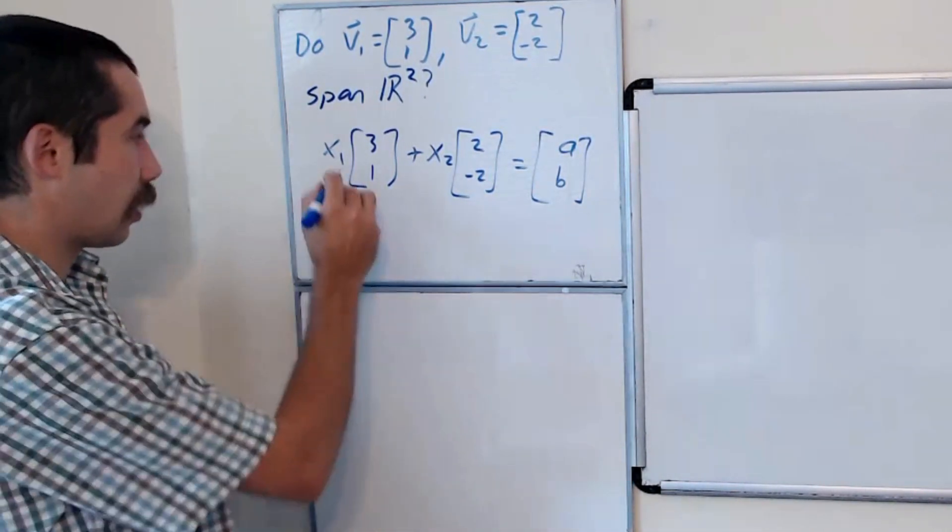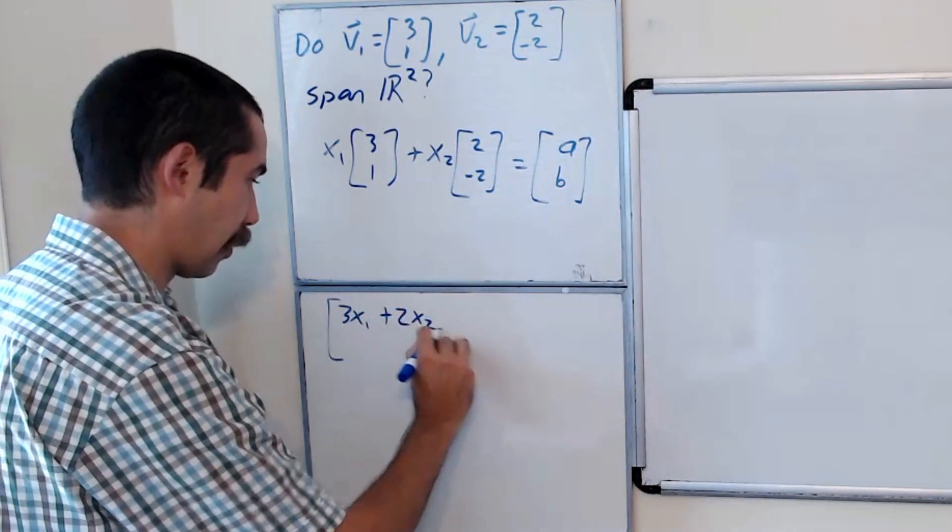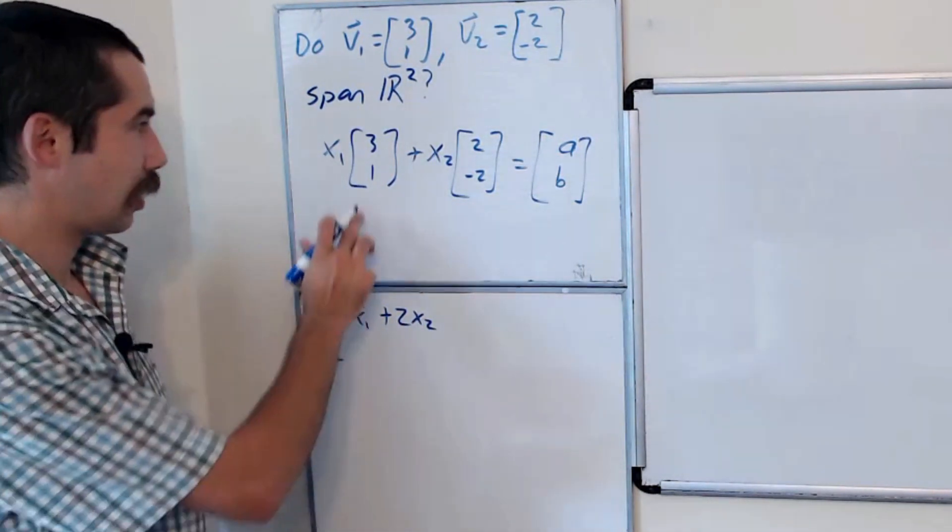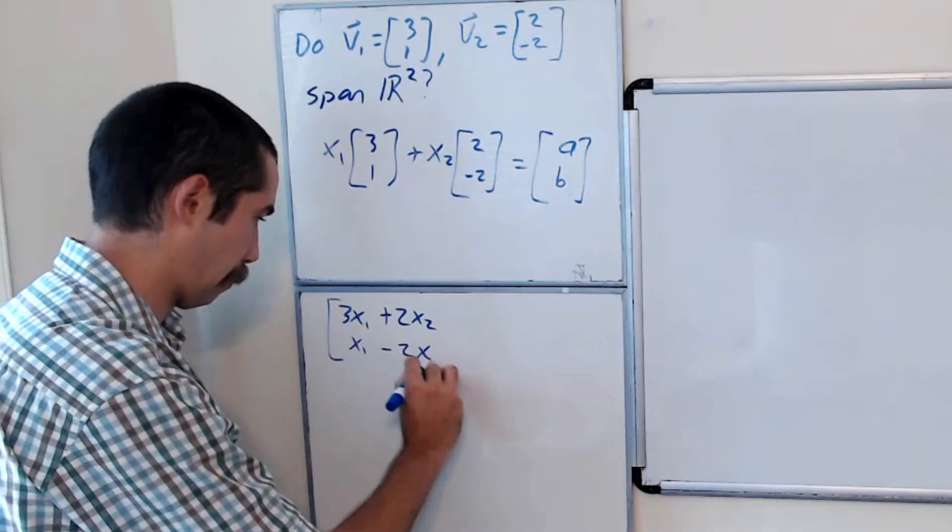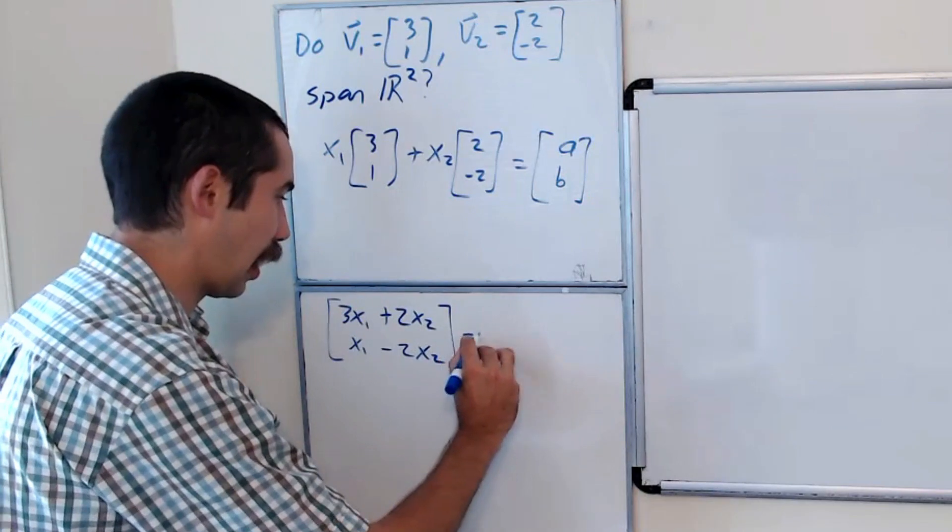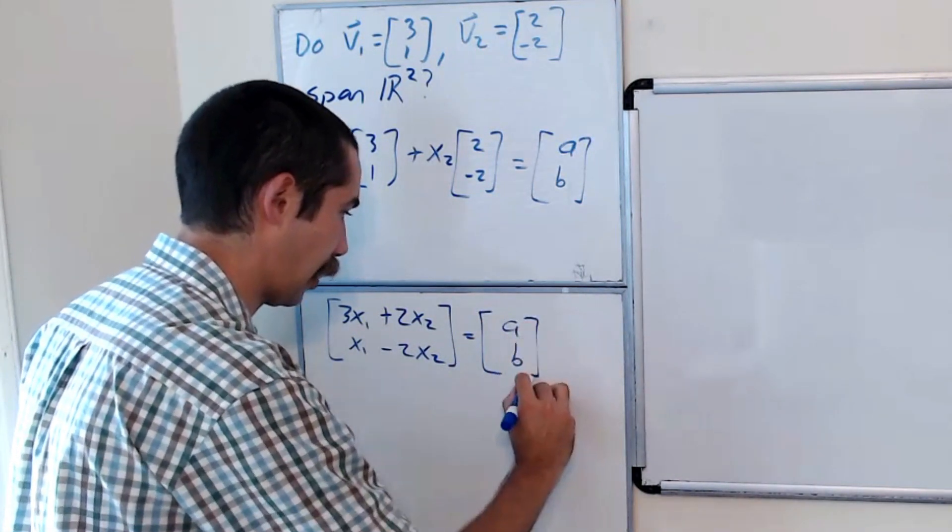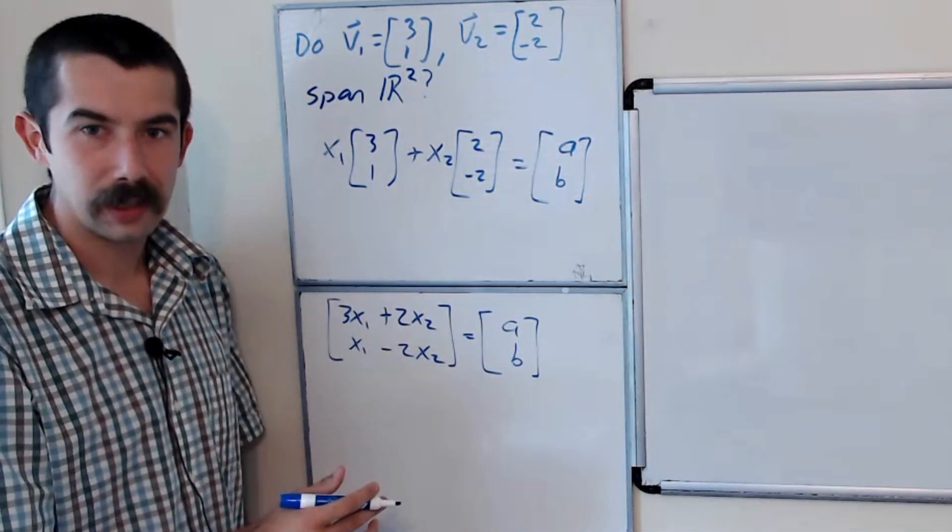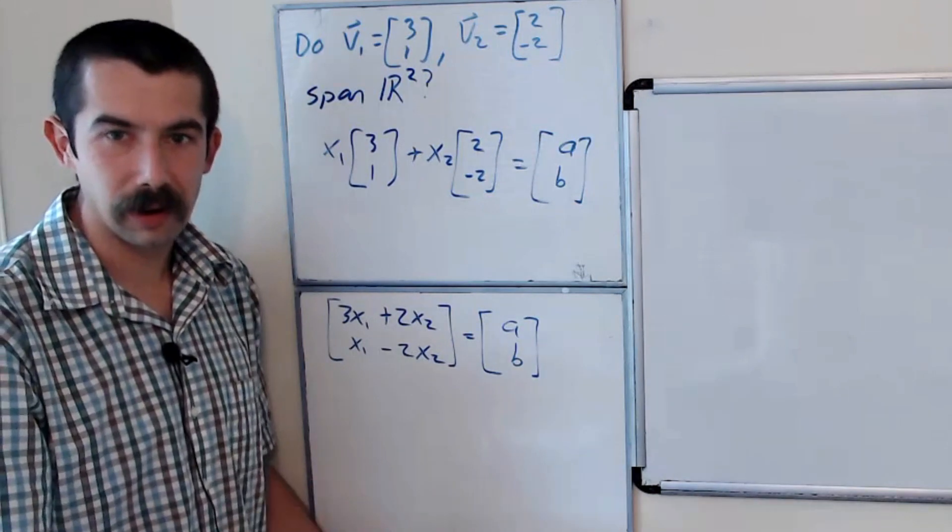So we get 3x1 plus 2x2 is our first entry, x1 minus 2x2 is our second entry, and it's equal to the vector a, b. And two vectors are equal to each other if and only if each of the entries are equal.